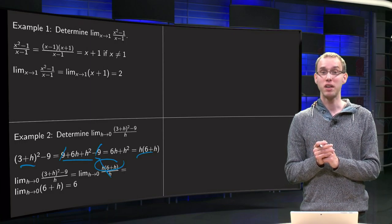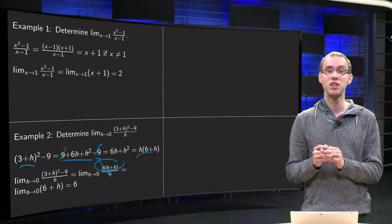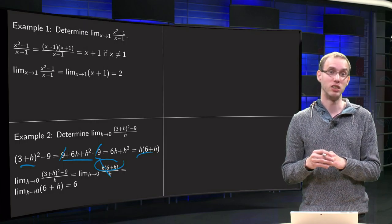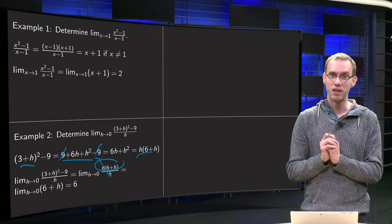And then we just have our limit h to 0 of 6 plus h, and that one is innocent, we can apply sum rule, and we get limit h to 0 of 6, which is just 6, and limit h to 0 of h is 0, so we get 6 plus 0 equals 6. So, there we have our limit.